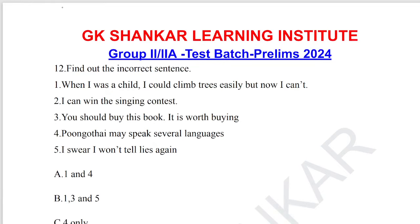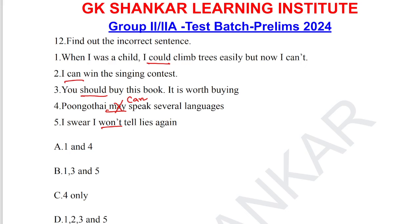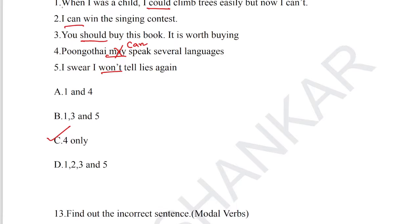Question number 12: find out the incorrect sentence regarding modal verbs. Sentence 1: 'When I was a child I could climb a tree easily but now I can't' — could for past ability, correct. Sentence 2: 'I can win the singing contest' — can for confidence, correct. Sentence 3: 'You should buy this book, it's worth buying' — should for suggestion, correct. Sentence 4: 'You won't tell lies again' — this is the incorrect usage. So option C is the answer for question number 12.